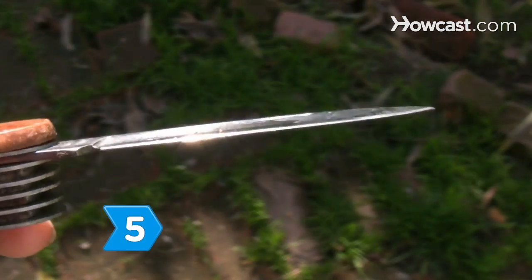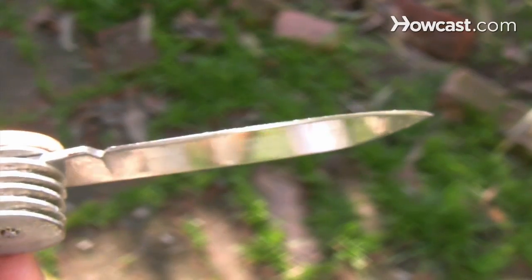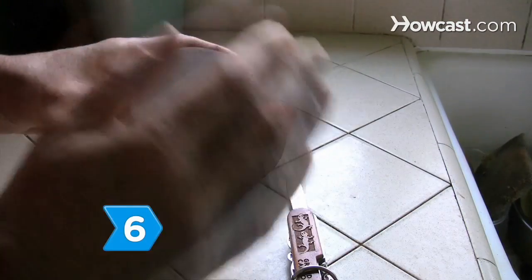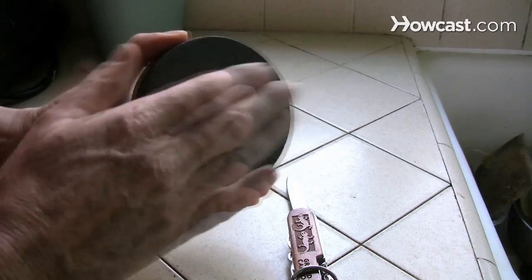Step 5: Check the sharpness by holding the blade under a bright light or sunlight. Step 6: Clean the small bits of metal off the stone by slapping it on your hand.